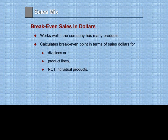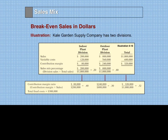Now, for break-even sales in dollars, it's the same approach — we just use the contribution margin percentage instead of the contribution margin per unit. For example, here we have an indoor plant division and an outdoor plant division. Indoor plant sales are $200,000 and outdoor is $800,000, so the total is $1,000,000 — giving a sales mix of 20% indoor and 80% outdoor. The variable costs and contribution margins are different because they are different products.